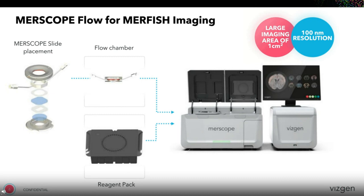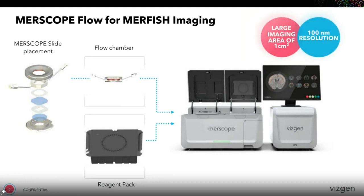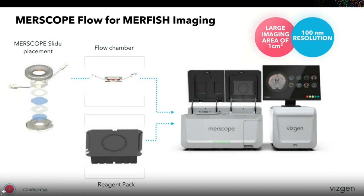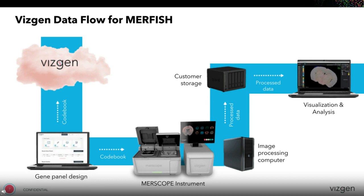As a targeted RNA imaging technology, the tissue sections are loaded to the MERSCOPE flow cell along with the associated reagent path. MERSCOPE has a very large imageable area of up to one square centimeter with imaging resolution down to 100 nanometers. The instrument will automatically acquire the data and transfer it to the imaging processing computer for analysis, as illustrated by the data flow for MERFISH shown on this slide.